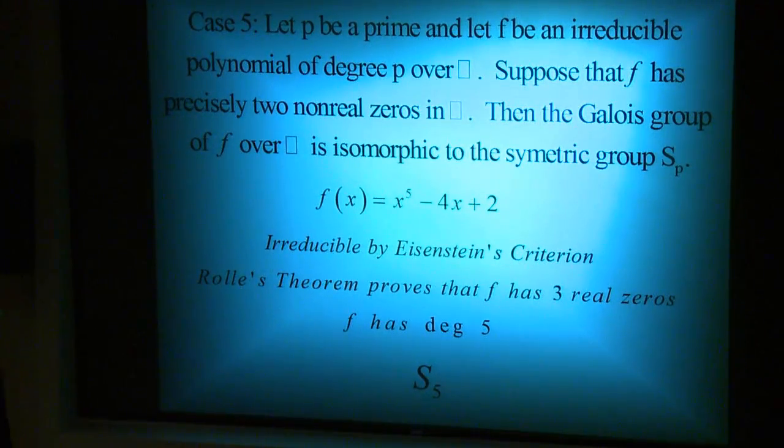Each with multiplicity 1, and two complex zeros. Also, F has degree 5. Thus, the Galois group is isomorphic to S5.